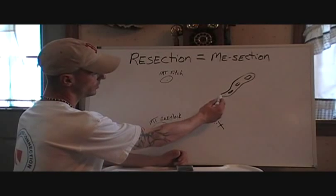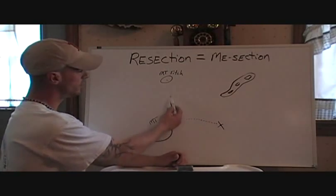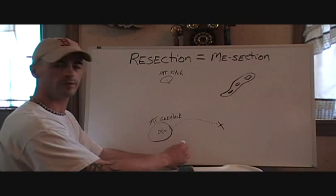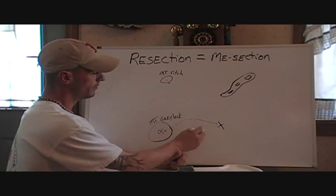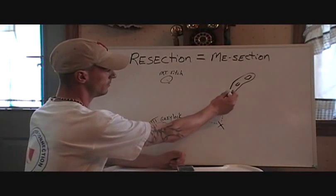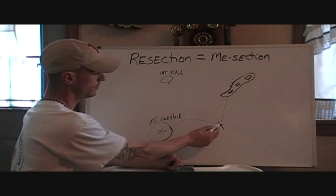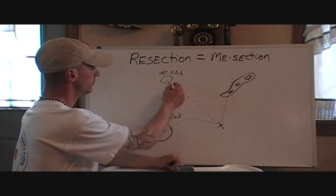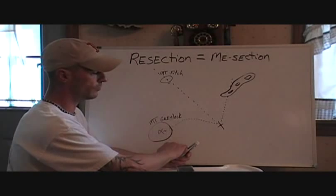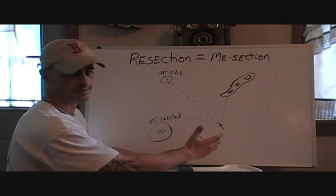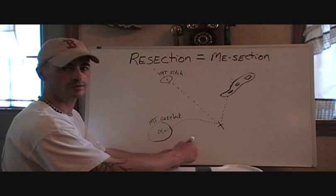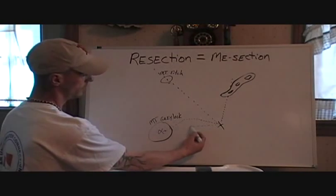We can see the ridgeline off to our right, Mount Fitch up to our northwest, and Mount Greylock — it's the tallest spot on the map. To find our grid, we're going to shoot an azimuth to this ridgeline, shoot another one to Mount Fitch. And if you have more than two that you can use, it's going to get you that much more accurate. So I would also shoot that other azimuth to Mount Greylock.